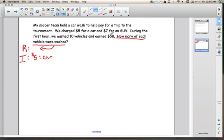This next part, $7 for an SUV, that must be important too. So I'm going to write $7 equals SUV. It says during the first hour. If we go back and look at the question, how many vehicles were washed, that question has nothing to do with time. This first hour is extra information. We don't need to write that down. It says we washed 10 vehicles.